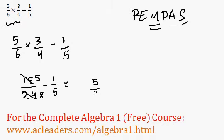So we have 5 over 8 minus 1 fifth. And now we're going to look for the greatest common factor between 8 and 15, which in this case is going to be 40.